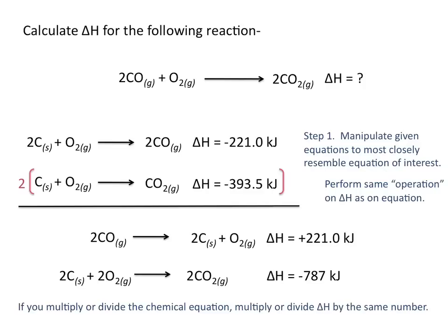I want to perform the same operation on delta H as I did on the equation. So if I multiply the equation by 2, I need to multiply the delta H value by 2. If the reaction carbon plus O2 gives CO2 had a delta H value of negative 393.5 kilojoules per mole, then 2 carbon plus 2 O2 giving 2 CO2 has a delta H value of negative 787 kilojoules per mole.